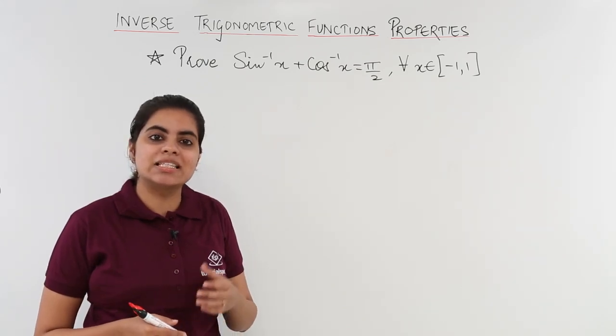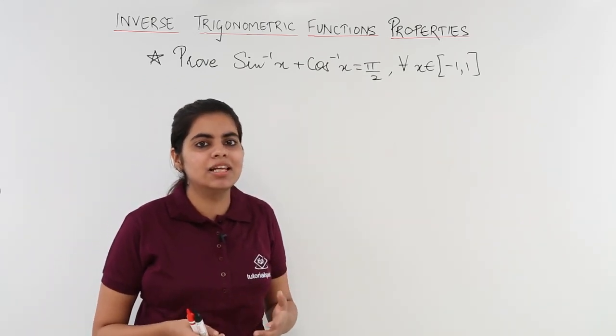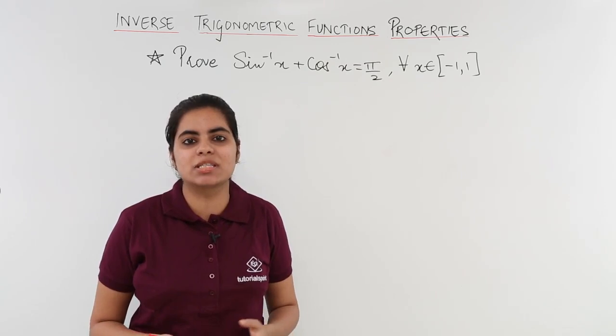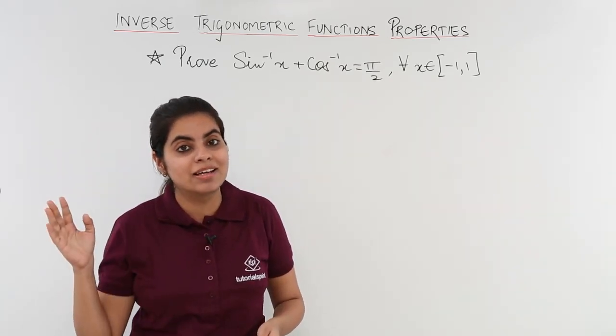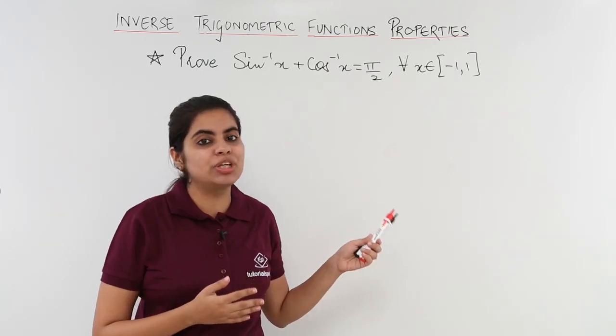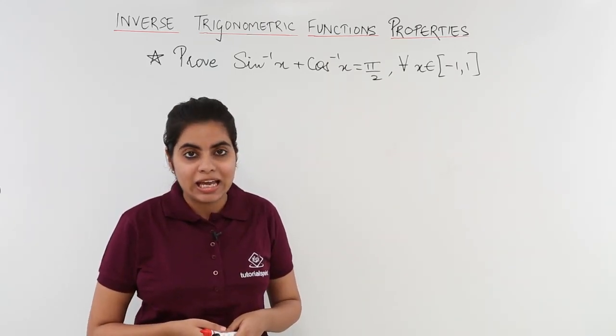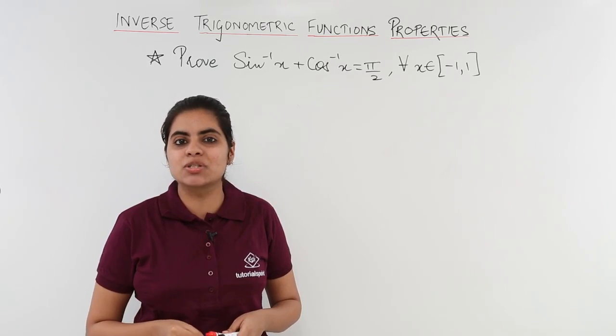Now I know that sin and cos have a relation as sin square theta plus cos square theta is equal to 1 but the story was long back. This is a new property which you need to understand and know and you need to understand the proof also by heart.